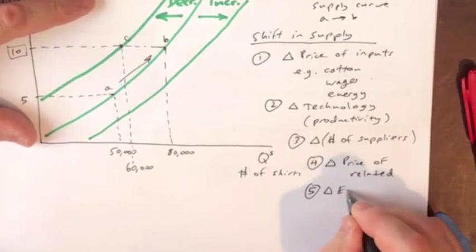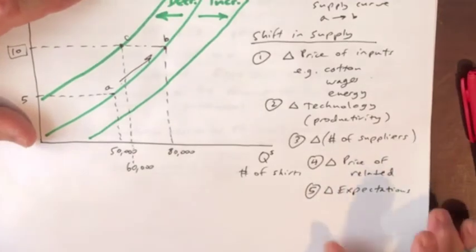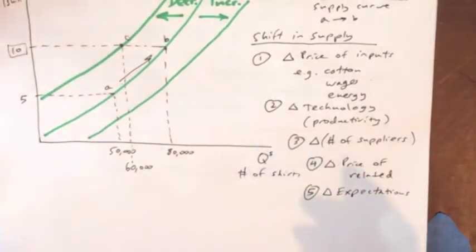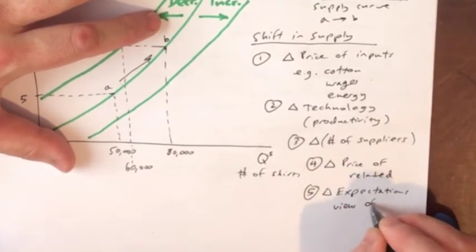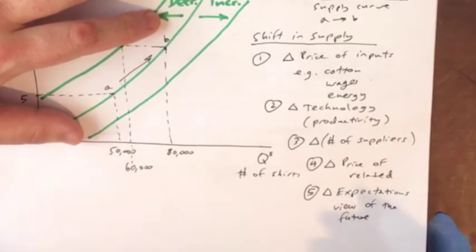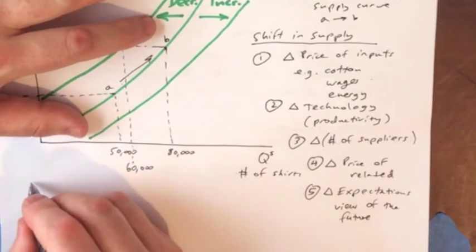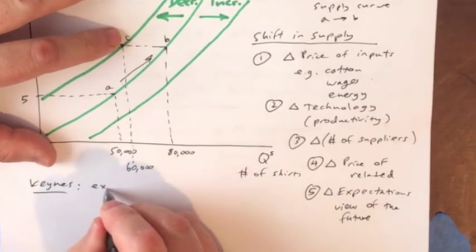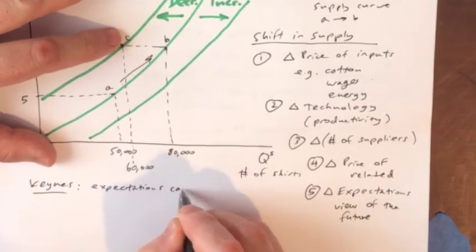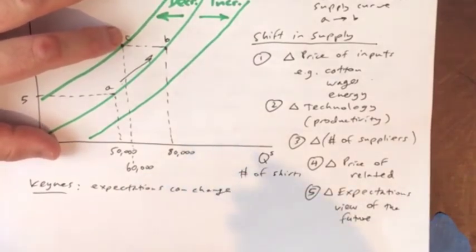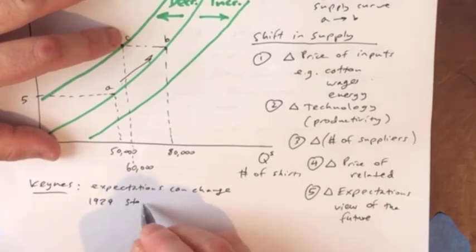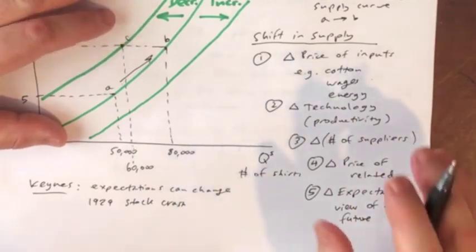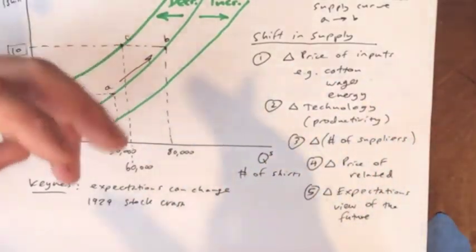And finally, it could be a change in the expectations of firms. Expectations is a highly psychological kind of explanation. This is about people's view of the future. Keynes in particular put a lot of emphasis on this. Keynes argued that expectations are one of these things that there's no way it can really be rational. None of us knows what's going to happen in the future. We form expectations. These expectations can change very rapidly.